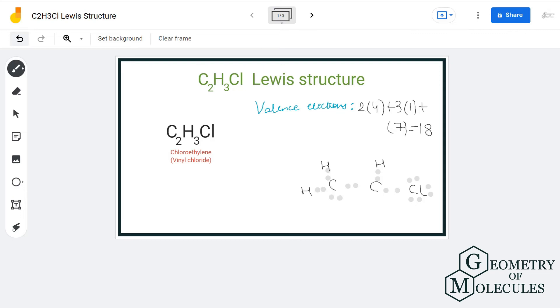However, if you notice here, all the atoms have complete outer shells because hydrogen atom has two valence electrons in its outer shell, chlorine atom has eight valence electrons, and this carbon atom also has eight valence electrons. But this carbon atom only has six valence electrons in its outer shell.